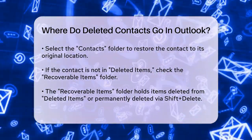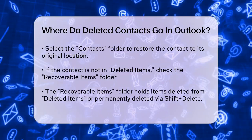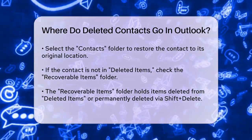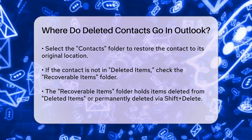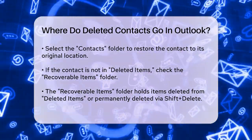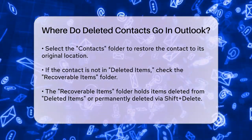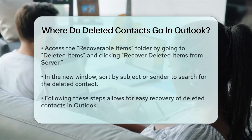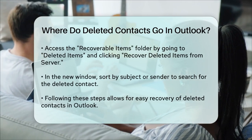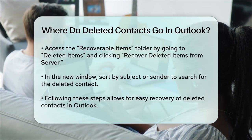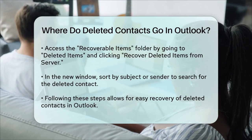There's another place you should check: the Recoverable Items folder. This is a hidden folder that stores items that have been deleted from the Deleted Items folder, or items that were permanently deleted using Shift-Delete. To access the Recoverable Items folder, go back to the Deleted Items folder, ensure the Home tab is selected, and then click on Recover Deleted Items from Server. This will open a new window where you can search for your deleted contact by sorting by Subject or Sender.